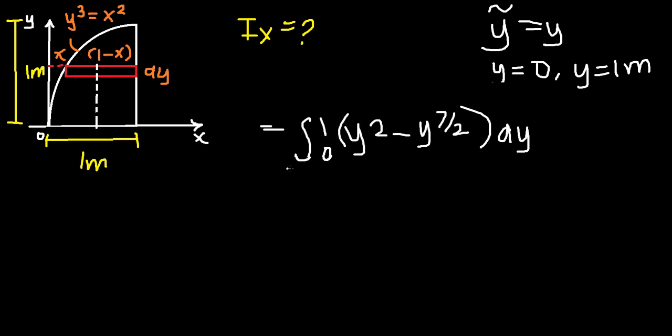All right, so here we'll do our integration. That equals, for our basic integration, just in case you forgot, it's y^(n+1)/(n+1). So our n here being our exponent value, which is 2, it will just be y³/3 minus, for 7/2 plus 1...